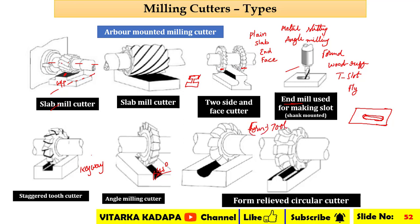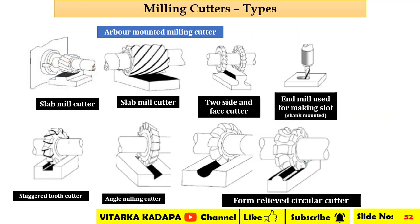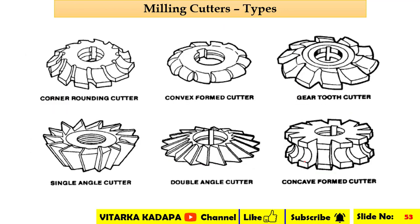This is called a form cutter. Form cutter refers to different types of form tools — whatever shape the tool has, that shape is reproduced on the workpiece. You can see a concave shape here and a convex shape on the top surface of the work pieces. There are also corner round cutters, where the shape has a corner round, and concave and convex formed cutters.